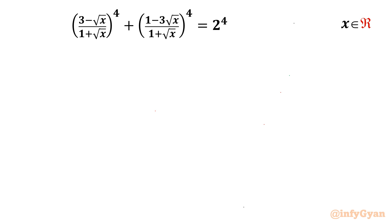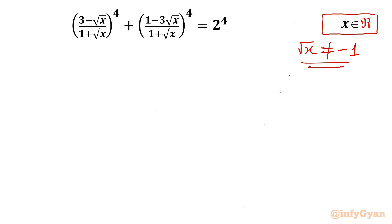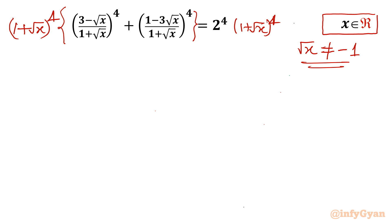Let's get started by writing the domain of the equation. The denominator cannot be zero, and for real x it won't be, because root x cannot be equal to negative 1. Since we are calculating real solutions, this won't happen. So what I will do now is multiply both sides by the denominator, that is (1 plus root x) whole power 4, so I can cancel these denominators.